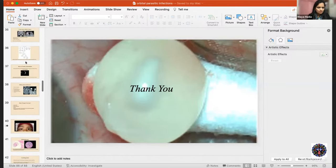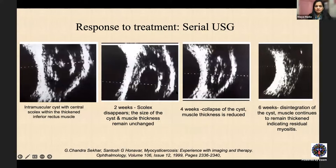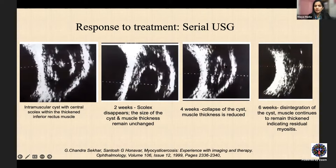Reviewing the serial sonographic features of treatment response: first image shows thickened muscle with a well-formed cyst containing a scolex; after two weeks of treatment the scolex disappears though the cyst and muscle thickening persist; at four weeks the cyst has collapsed — albendazole's role is complete; the muscle remains thickened from myositis so steroids are continued; at six weeks the myositis is resolving and muscle thickness has decreased.